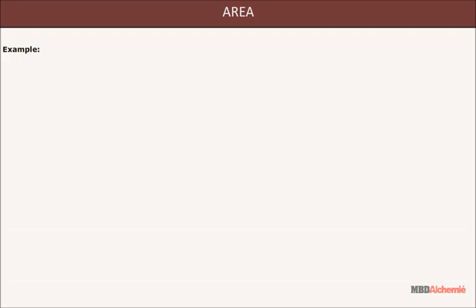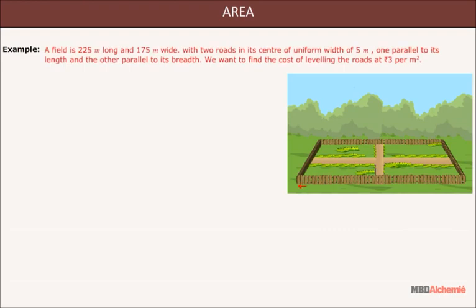Example. Let us learn more about the concept of area through this example. Consider a field 225 meter long and 175 meter wide with two roads in its center of uniform width of 5 meters each. One parallel to its length and the other parallel to its breadth. We want to find out the cost of leveling the roads at the rate of ₹3 per meter square.